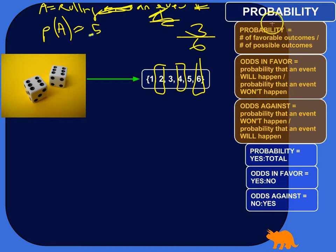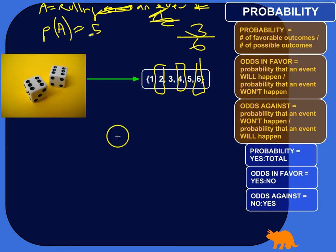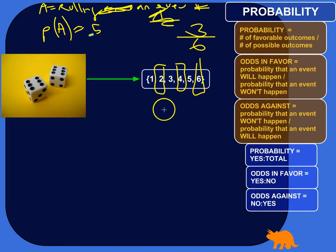So that's probability. Now odds are a ratio between probabilities. The odds in favor of something happening are the probability that the event will happen versus the probability that the event won't happen.